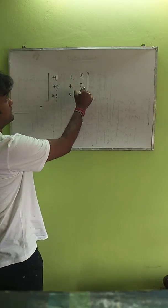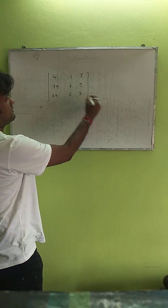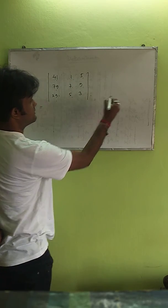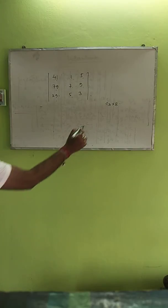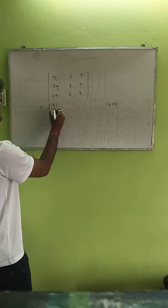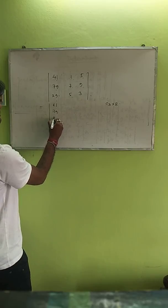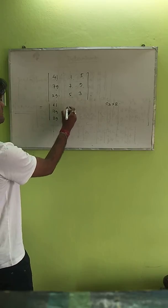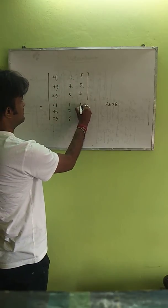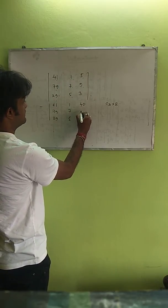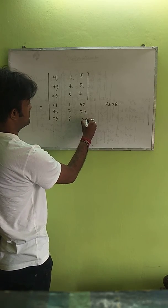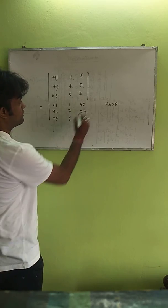First, we multiply the third column C3 by 8. We multiply 8 by the third column: 41, 79, 29, 175, 40, 72, 24.